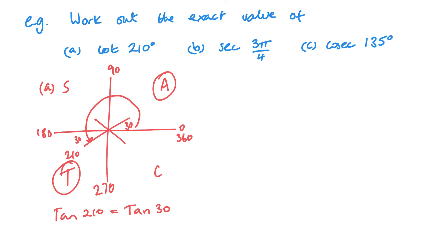So tan of 210 will be the same as tan of 30. Now, if you have used the triangles in the past for your 30 and 60 degrees, then you know that tan of 30 is 1 over root 3. So cot 210 is cot 30, which will be root 3.